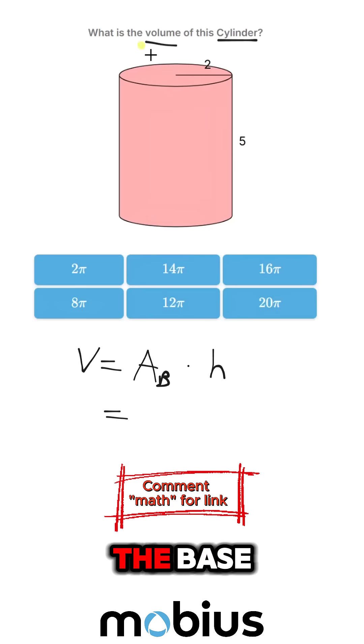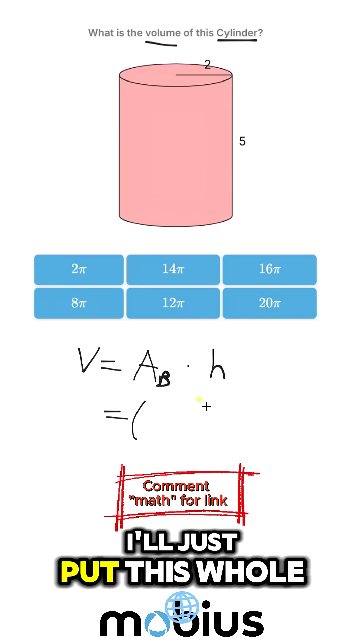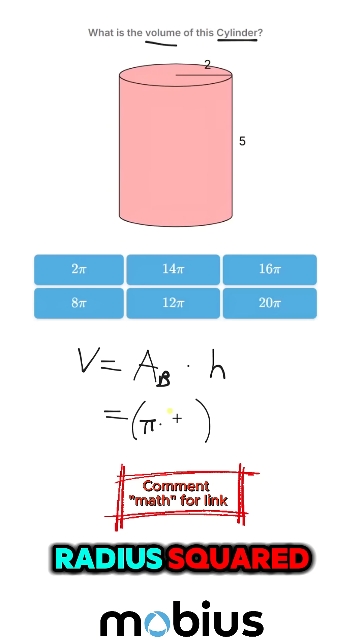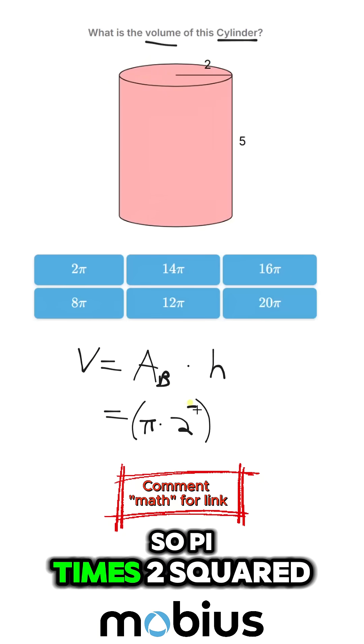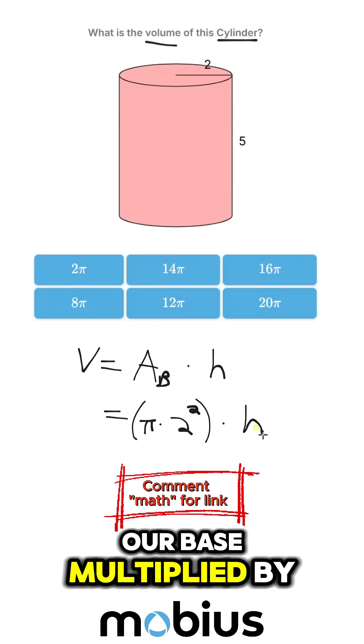And the area of the base, this is a circle. So the area of a circle, I'll just put this whole area of the base in brackets here, is pi times the radius squared. So pi times 2 squared, that's the area of our base, multiplied by the height.